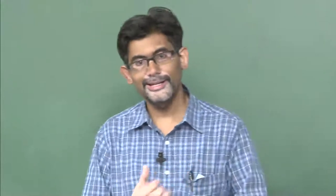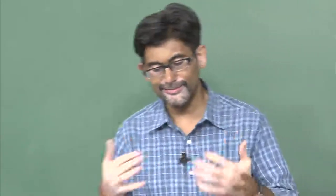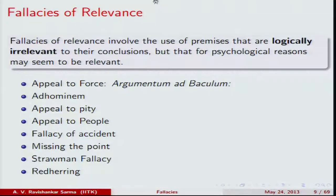Fallacies of relevance have been known since antiquity — since the Greek period. The first is appeal to force, also called argumentum ad baculum. The second is attacking the arguer in person — the ad hominem argument. When you invoke pity it leads to an appeal to pity. Other commonly found fallacies of relevance include: appeal to people, fallacy of accident, missing the point, strawman fallacy, and red herring. In all these fallacies, the premises are not logically relevant to the conclusion, though they may be psychologically relevant.